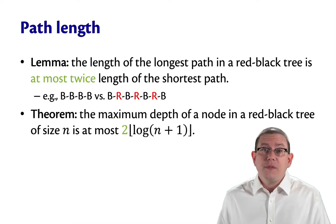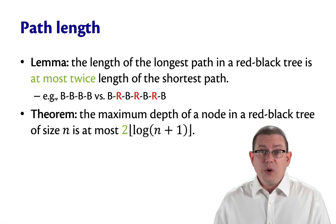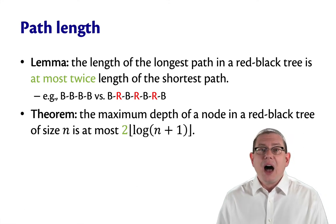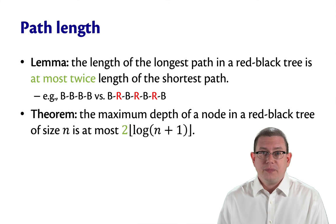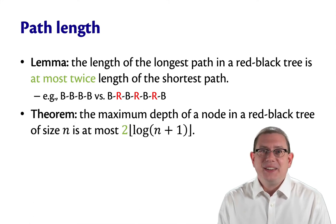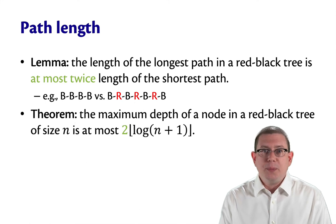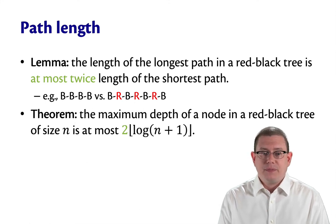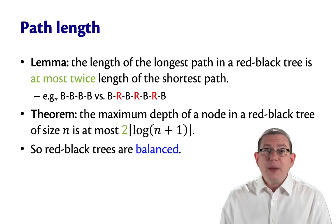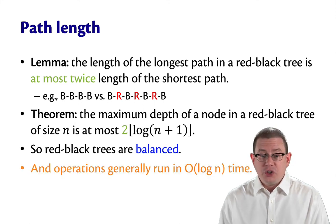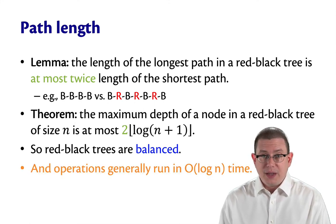That means all of our operations are going to run in logarithmic time in the size of the tree. Isn't that great? We get logarithmic performance by enforcing those red-black invariants. That means red-black trees are balanced and all the operations generally run in logarithmic time.